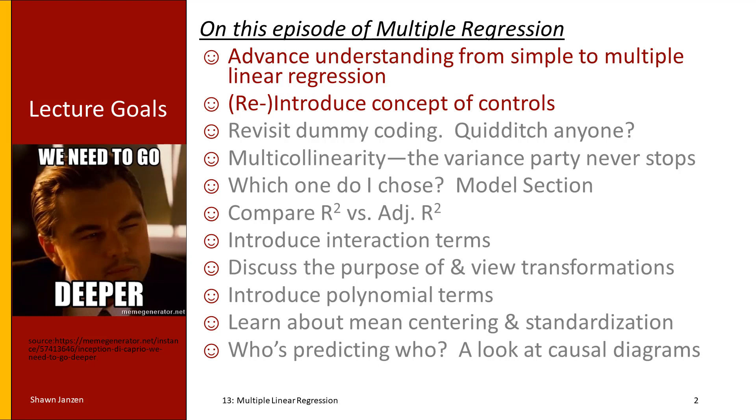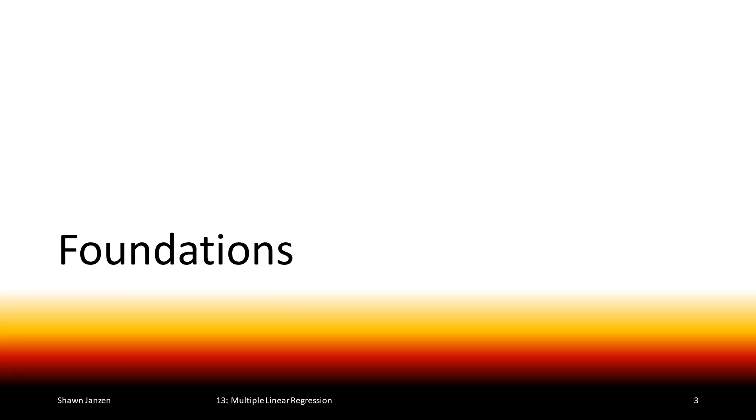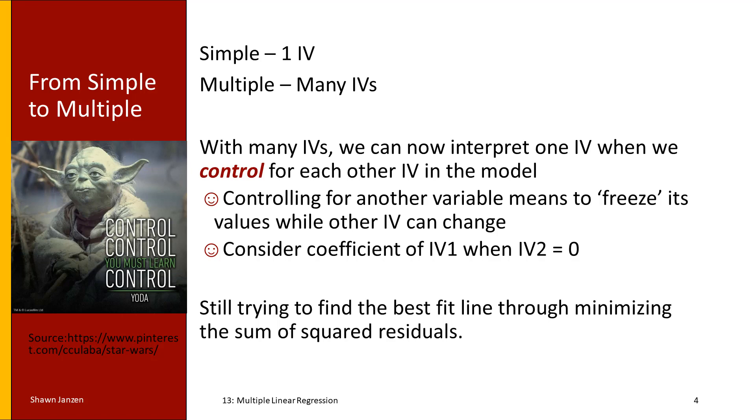And then we're going to go into some interesting things you can do now that you can have multiple variables in your model, multiple independent variables in your model, where we can talk about things like interaction terms, transformations, polynomial variables, what it means to standardize your variables. And we're going to close it off with just a bonus topic on how to do some causal diagrams.